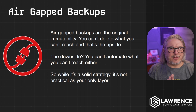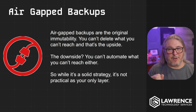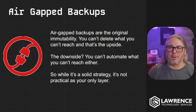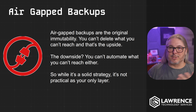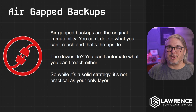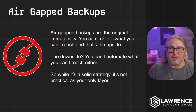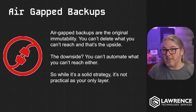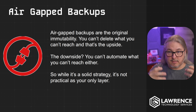Air-gapped backups — I'm not going to talk too much about these, but air-gapped backups are the original immutability. You can't delete what you can't reach, and that's the upside. The downside: you can't automate what you can't reach either. I used to work for a company in the 90s that had bought closed banks and used the vaults for a backup rotation — we carried tapes around in a rotation to different clients in the area and stored them in the vault. While it's a solid strategy, it's not always practical, but there are absolute mission-critical use cases where this is still done.